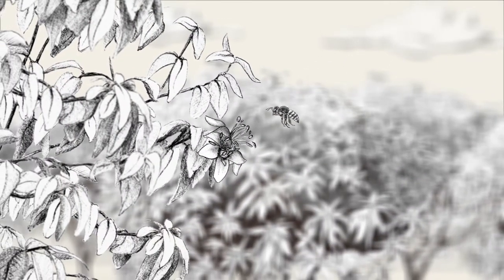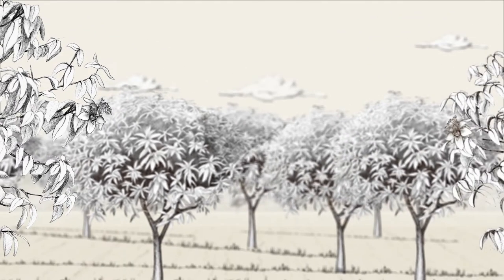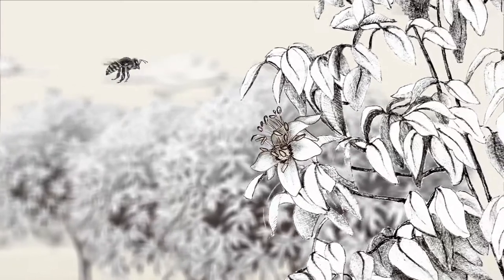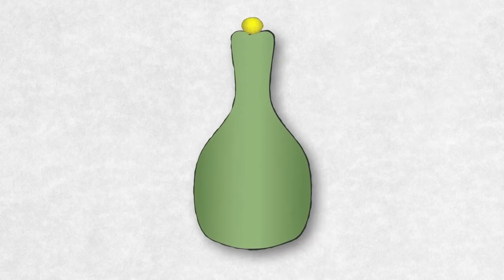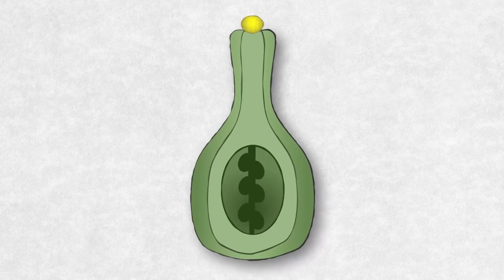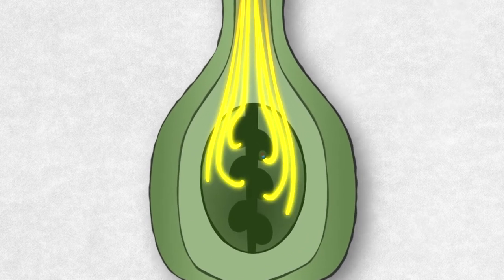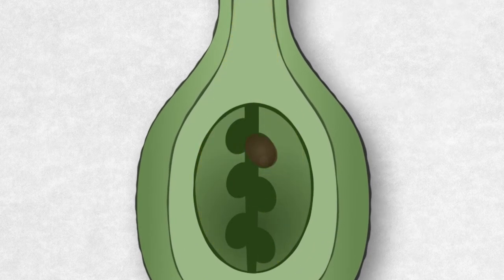Pollinators are animals that help plants with their reproduction. Their role is to transfer the pollen between flowers. The pollen deposited by pollinators fecundates the ovules, which will become the fruit that will perpetuate the cycle of life.